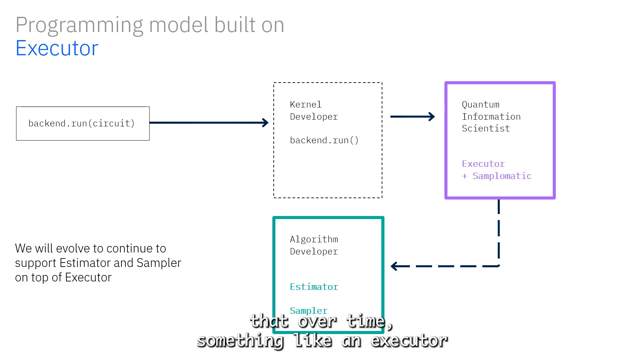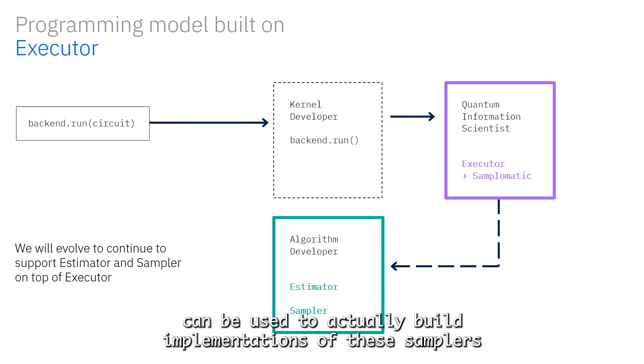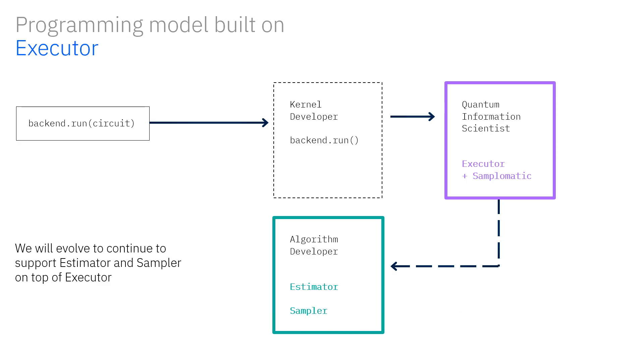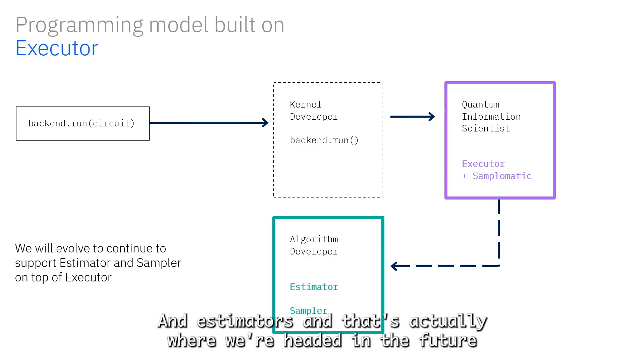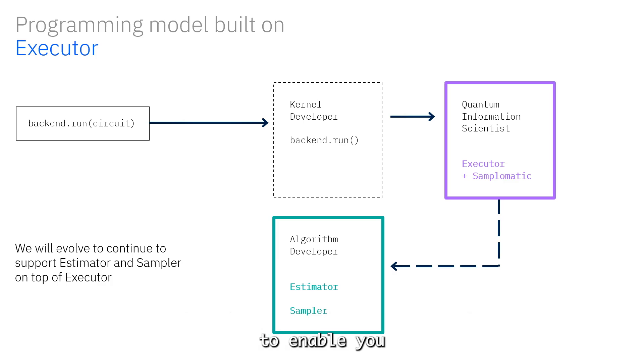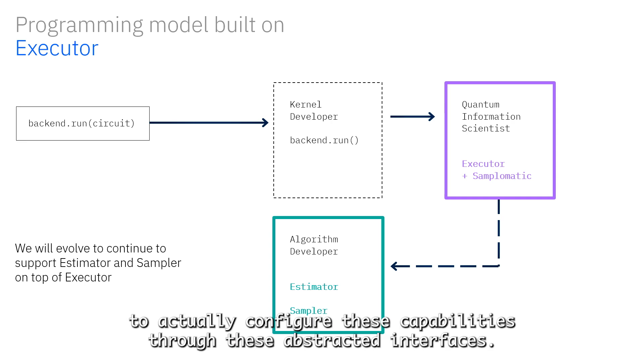You can imagine that over time, something like an executor can be used to actually build implementations of these samplers and estimators, and that's actually where we're headed in the future—to enable you to transparently still run the workloads you run using sampler and estimator today, but we believe that rolling out this new interface will allow you to configure these capabilities through these abstracted interfaces.